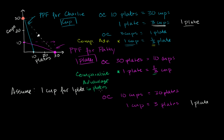So that's why it made sense for her to specialize in plates. Charlie, on the other hand, had a comparative advantage in cups. His opportunity cost for producing a cup was only one-third of a plate, while Patty's was three plates. So that's why he specialized in cups.